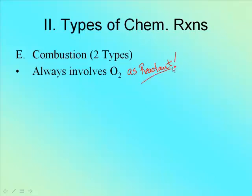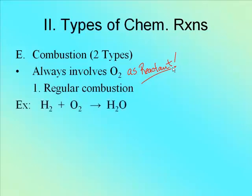Some people like to get weird and throw it in as a product. Not going to happen. Must be a reactant. You have to supply oxygen in order to get the fire to burn. So first of all, let's talk about just regular, everyday combustion. This is an example of a regular, everyday combustion. Hydrogen gas plus oxygen gas yields water. Notice, plus O2.